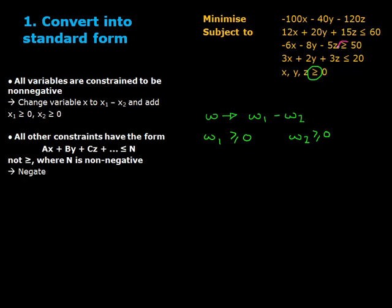Additionally, all constraints must have the form Ax + By + Cz must be less than or equal to N, where N is a non-negative constant. Here, the second constraint is greater than or equal to. We have to change this to less than or equal to. We do this by negating all the coefficients and flipping the inequality.